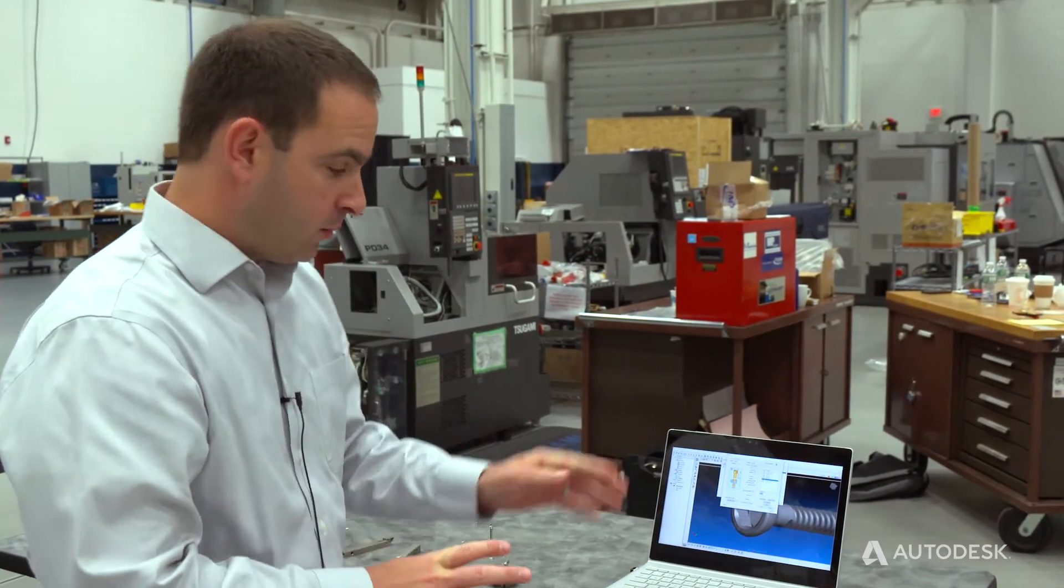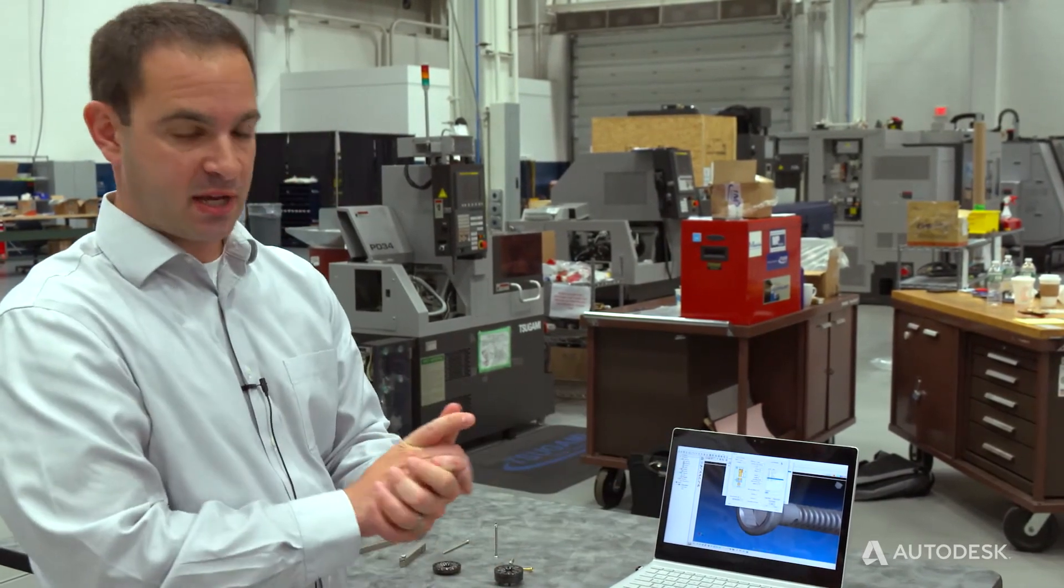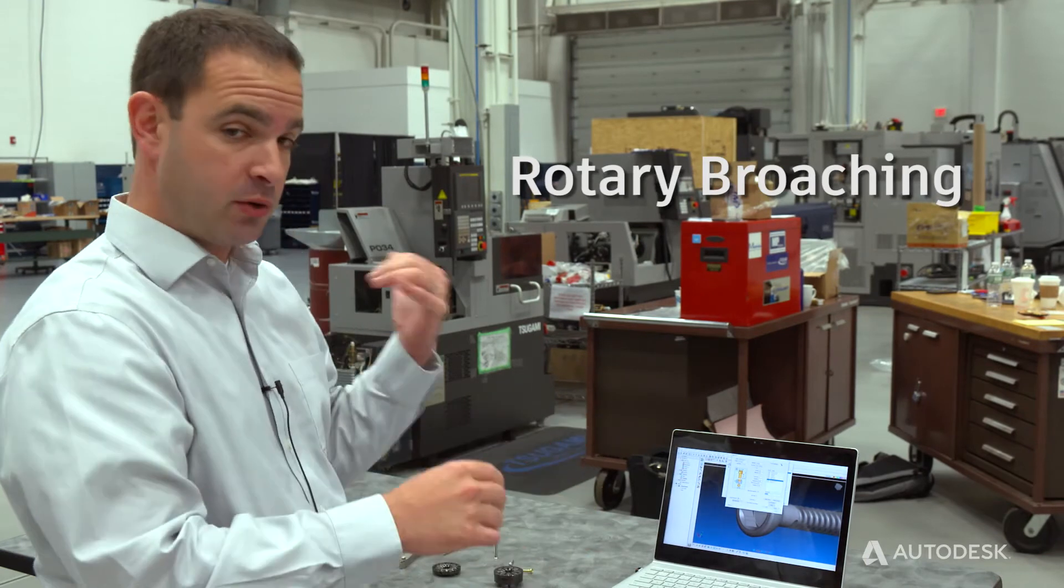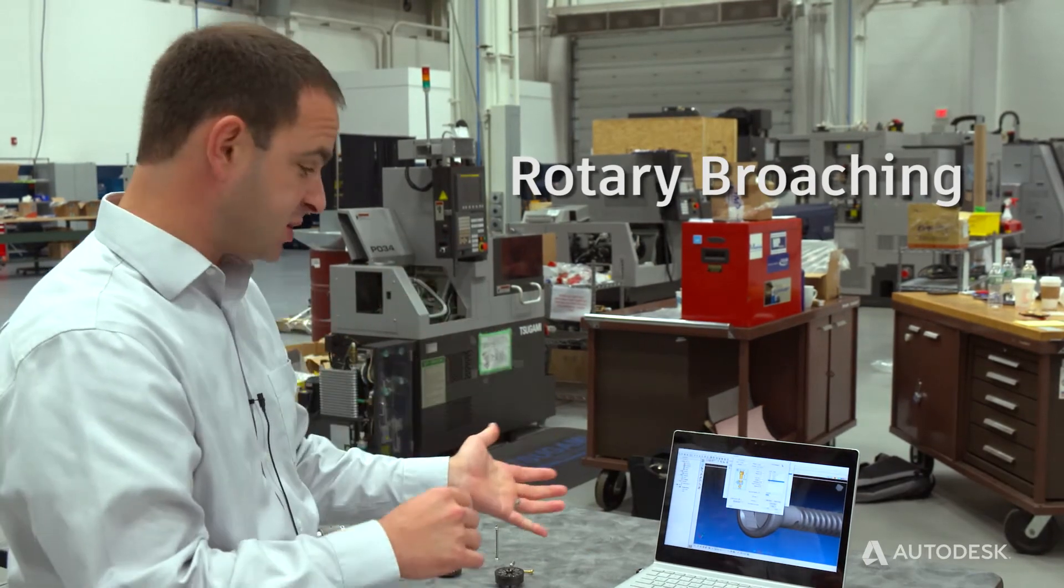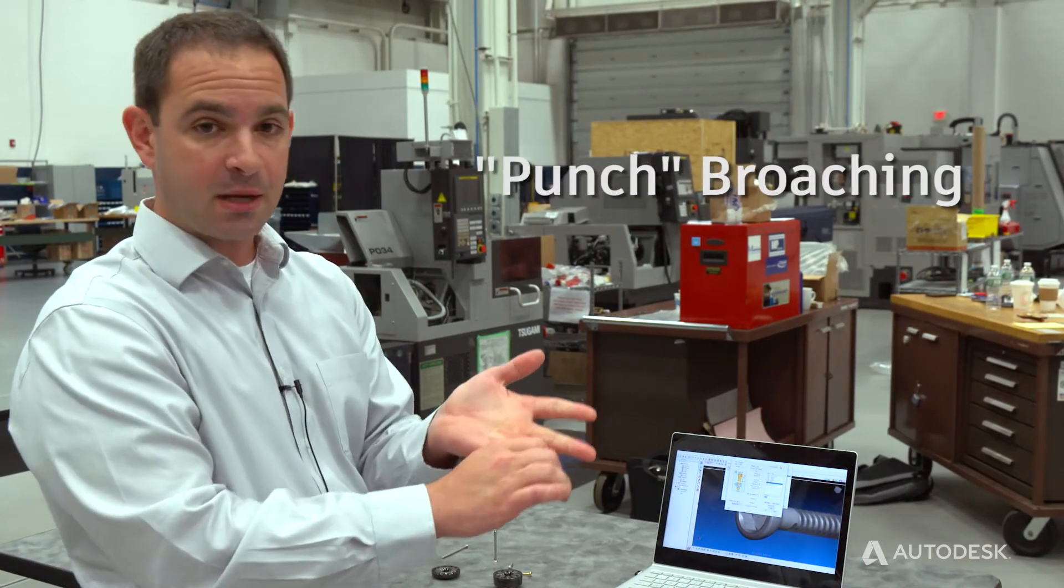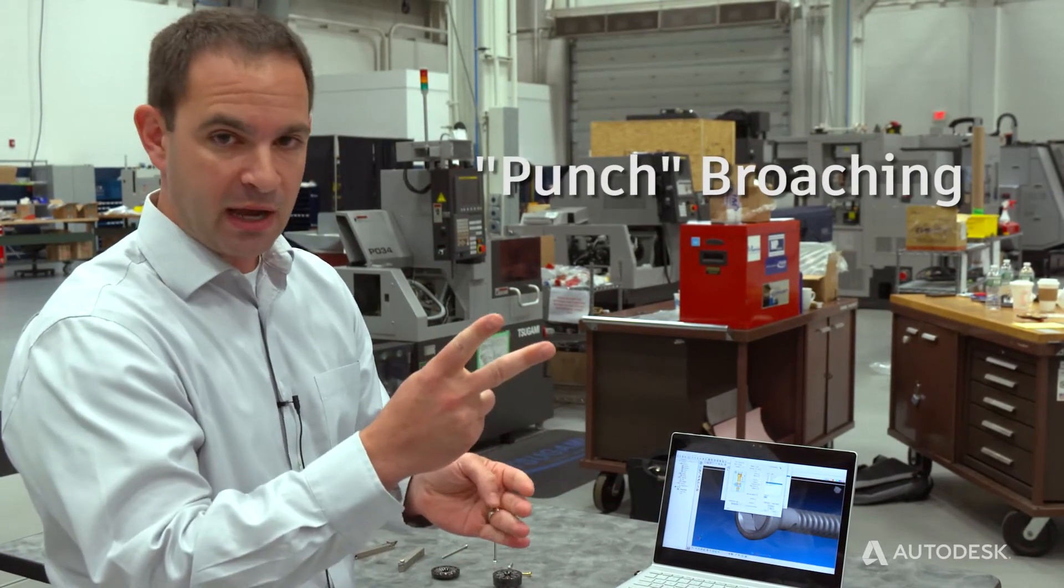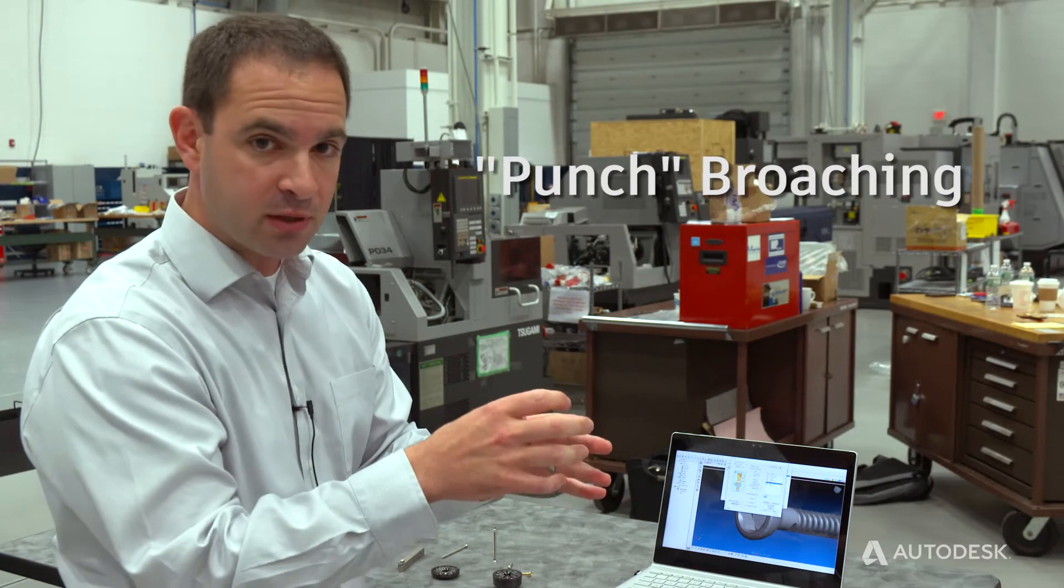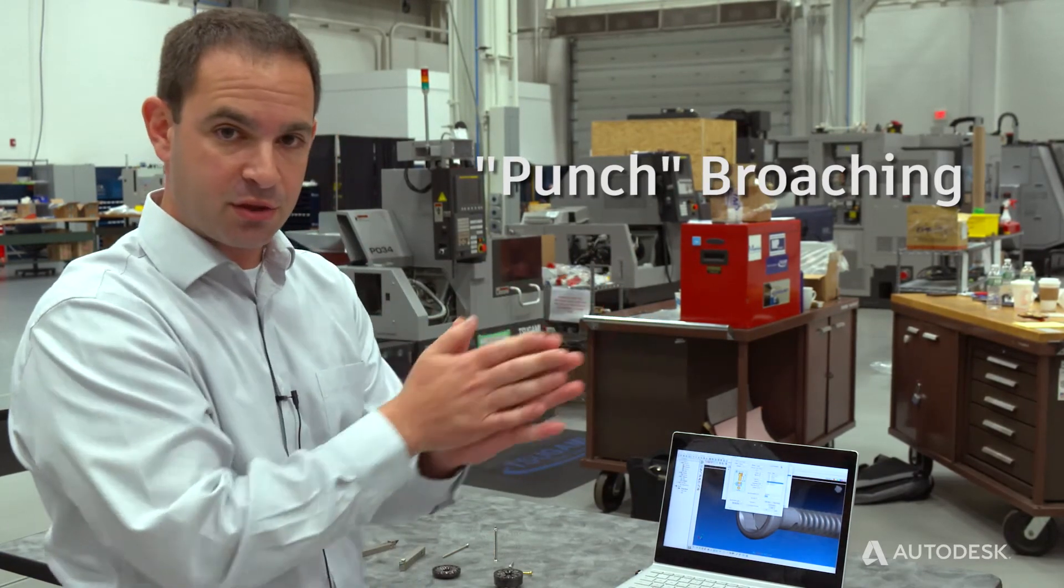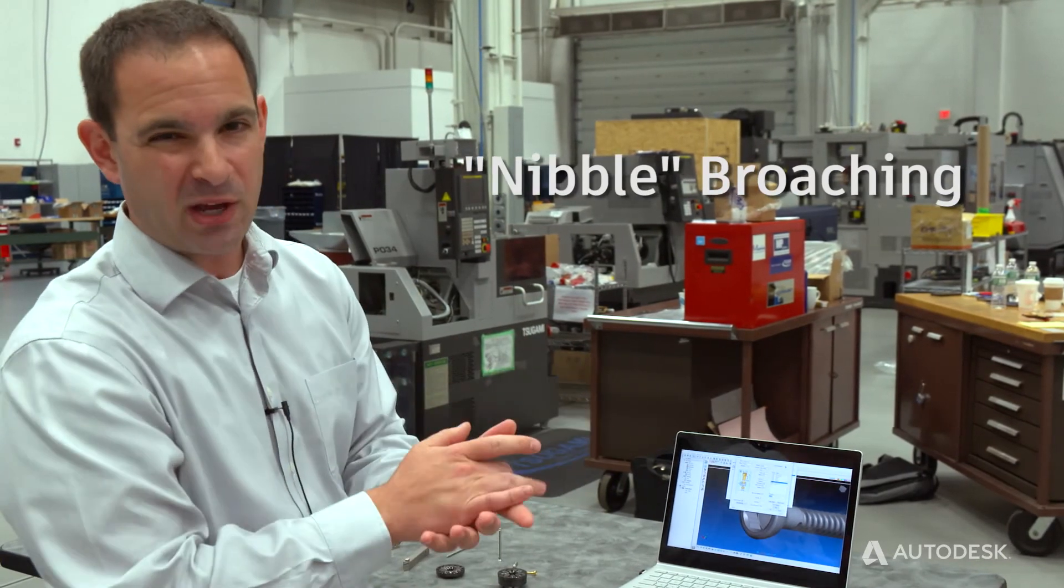So because Autodesk has a specialized Swiss solution, we have specialized processes. We support three types of broaching: rotary broaching or wobble broaching like we've shown here today on the Tsugami with GenSwiss rotary broaching tools. We also support static broaching of two kinds, either what we call index punch broaching, where we take a rectangle and punch the shape three times at three angles to make the hex, or what some people may call nibble broaching.